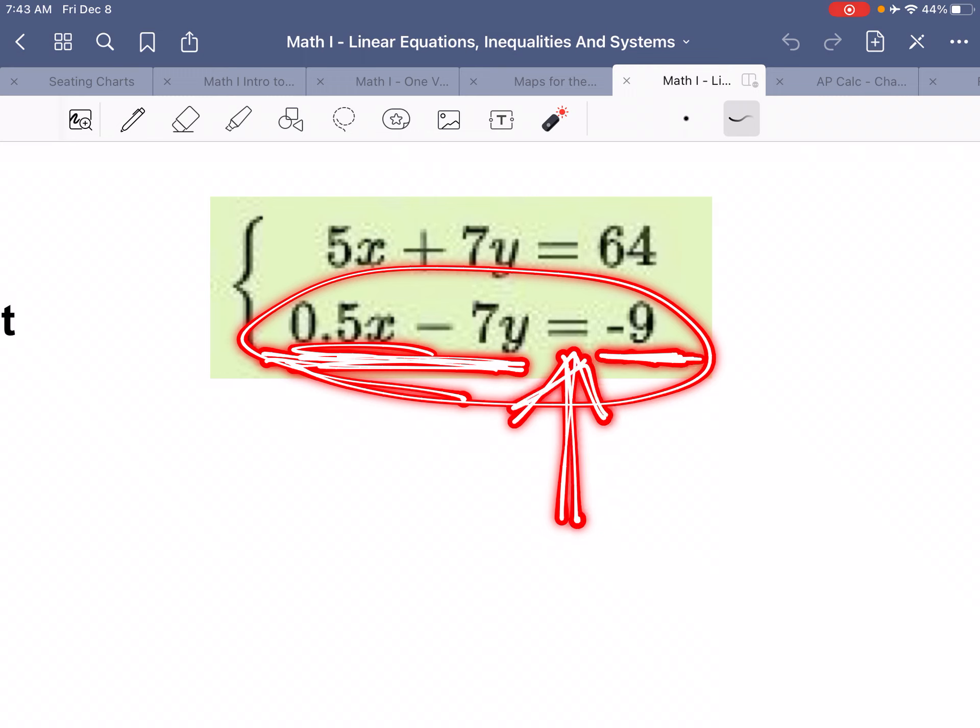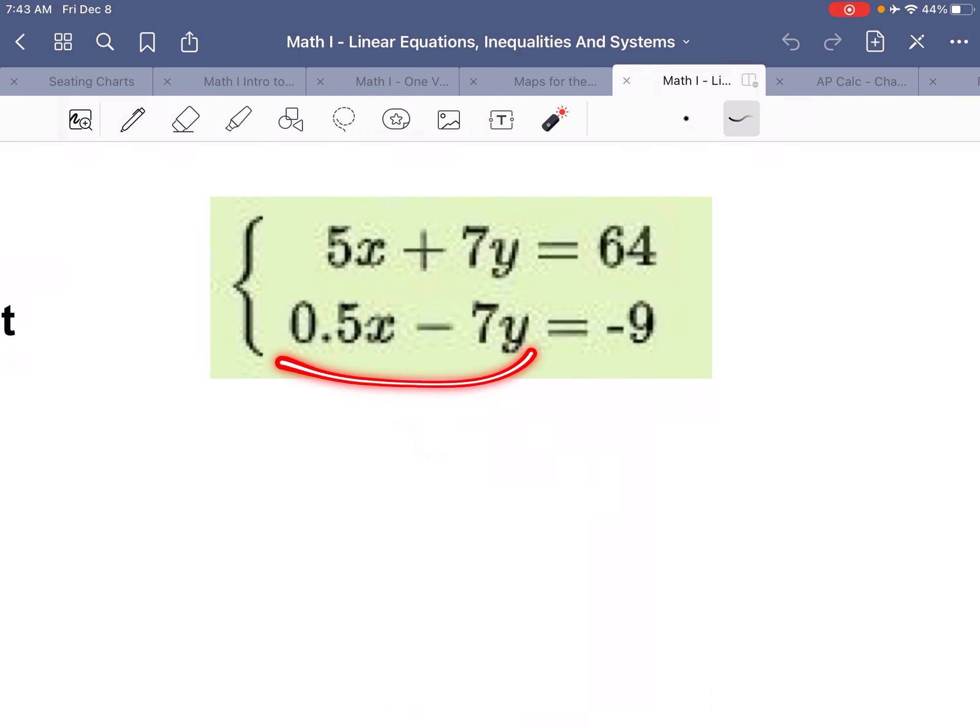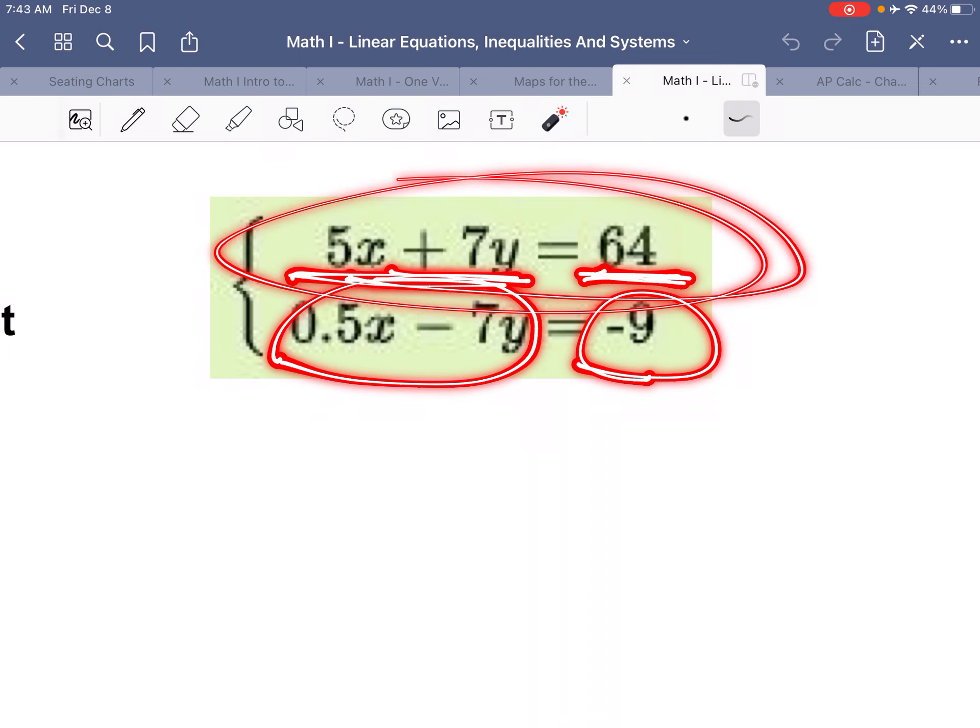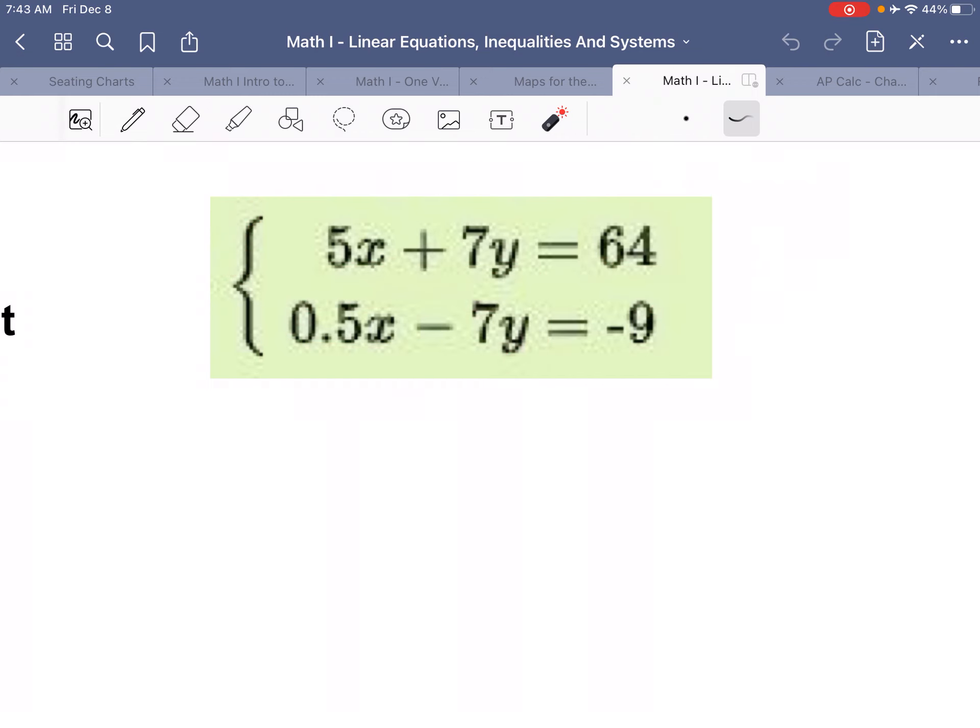So what we can do is we can add this to the left side of this equation and this to the right side of the equation and keep this equation balanced because these are the same value. If we add the same value to both sides, it stays balanced.